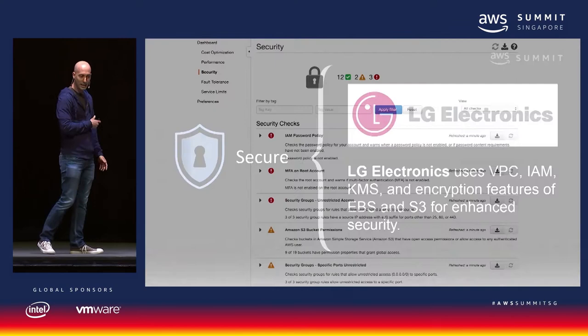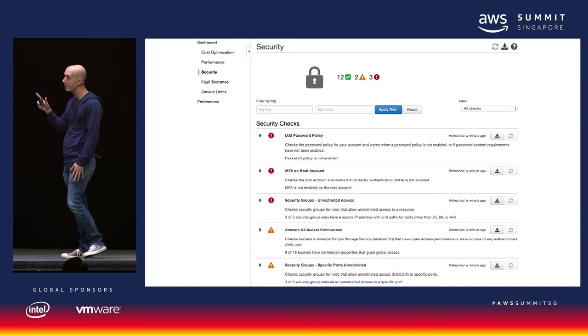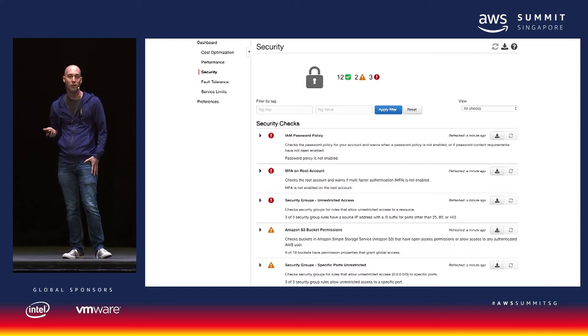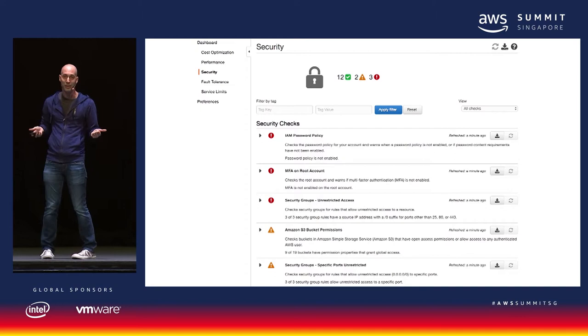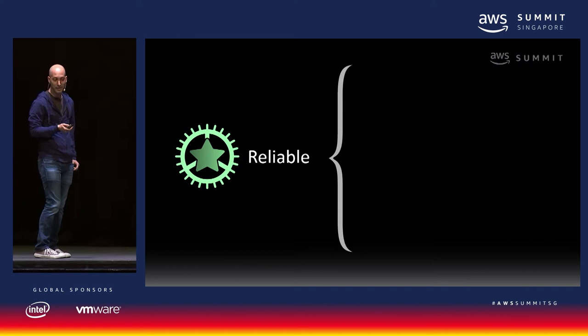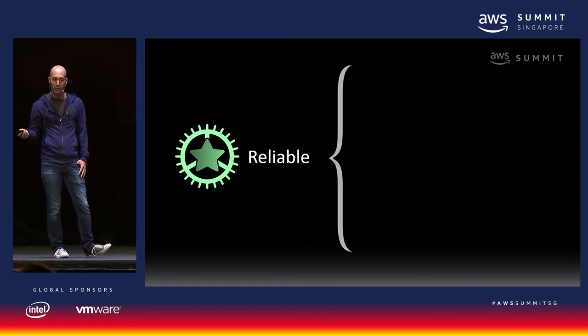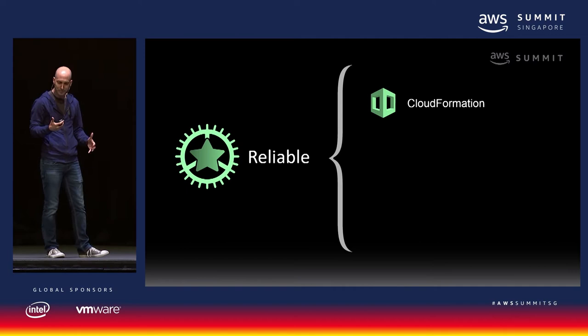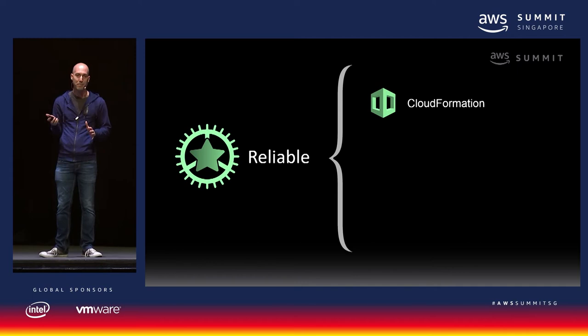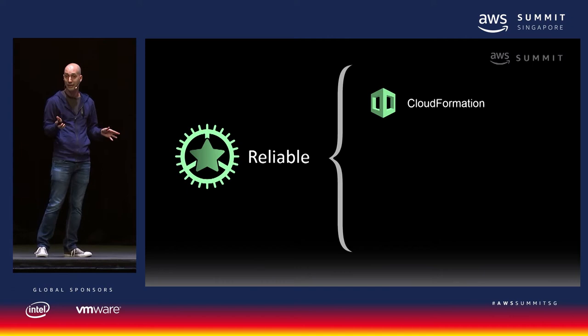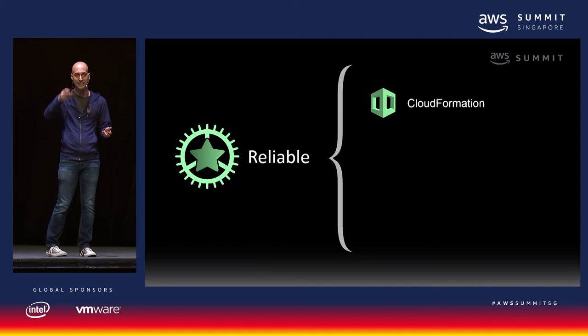Here's a screenshot of Trusted Advisor — there are different sections to the dashboard, including a security section that gives you a list of things to look at, like needing a password policy on your IAM accounts. Moving on to reliability: it starts with knowing that the environments you're provisioning are repeatable. CloudFormation is our tooling for infrastructure as code. Along with CloudFormation, especially if you're into serverless, is SAM — the Serverless Application Model, an extension for CloudFormation that makes setting up serverless CloudFormation stacks much less verbose.